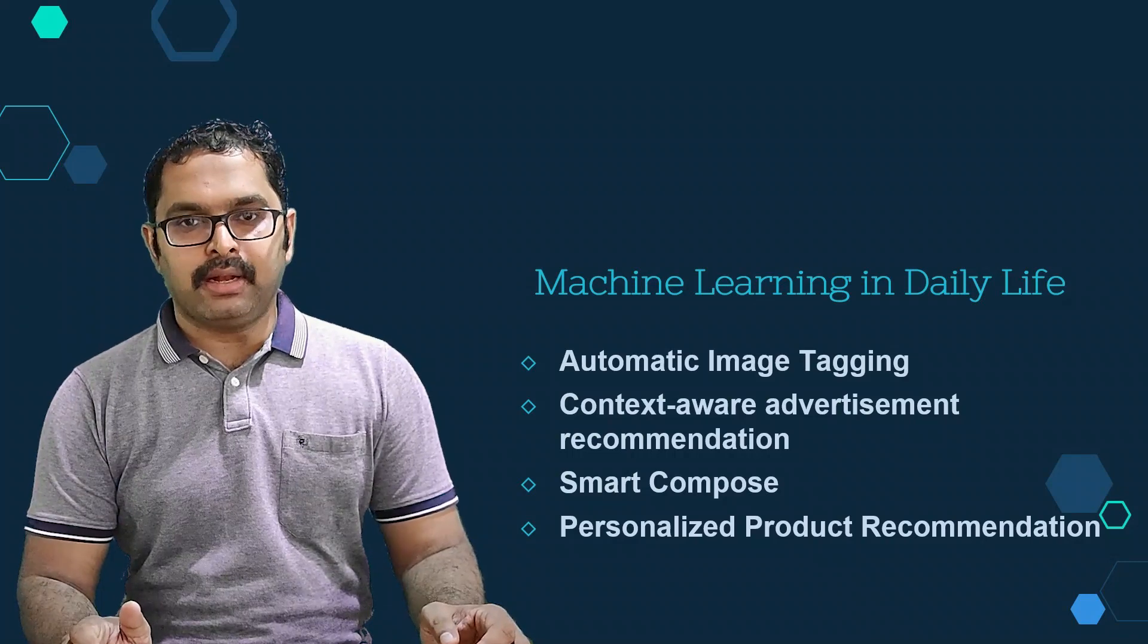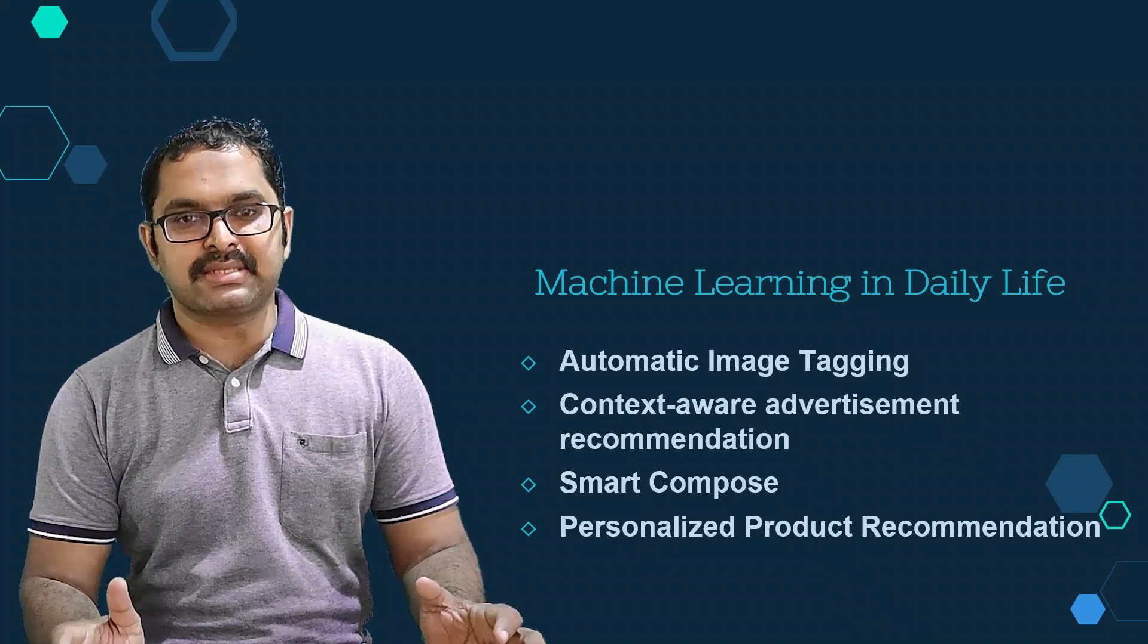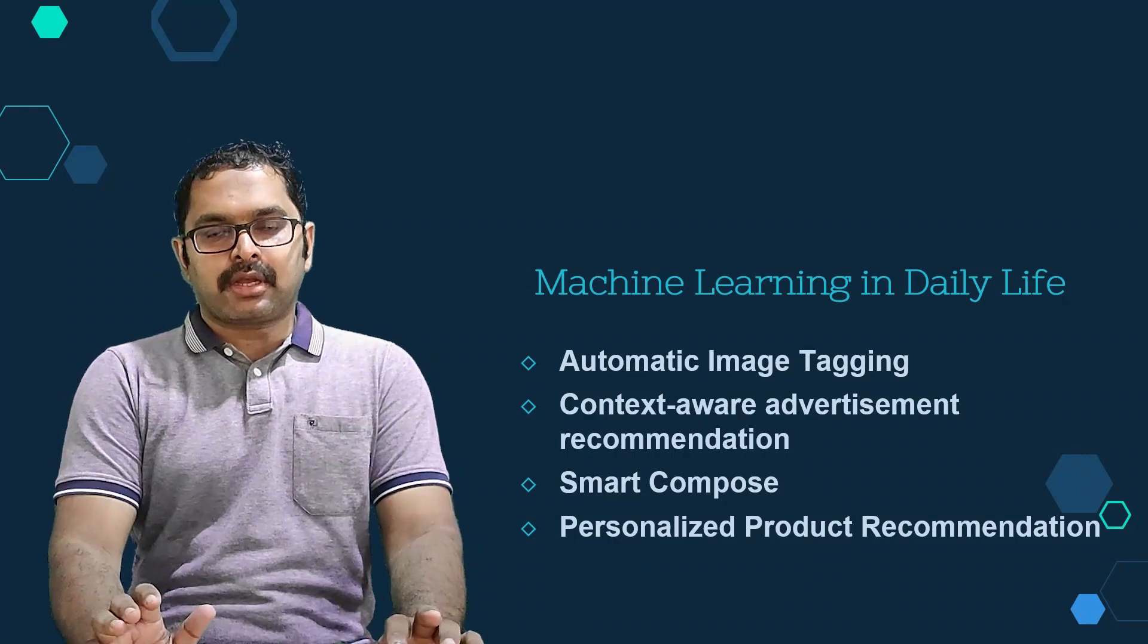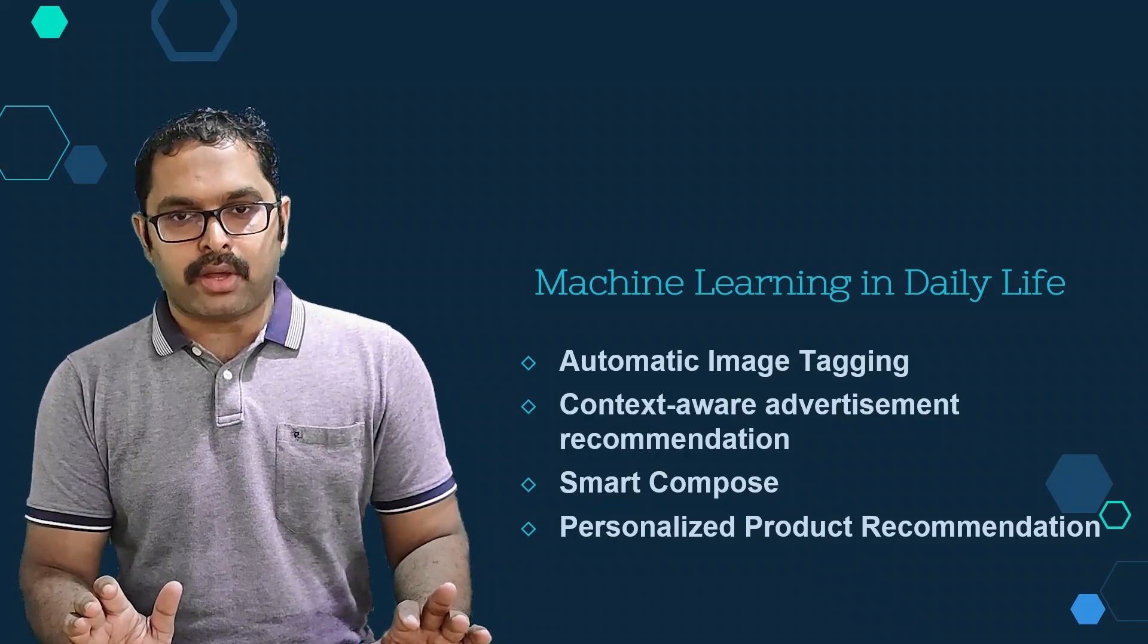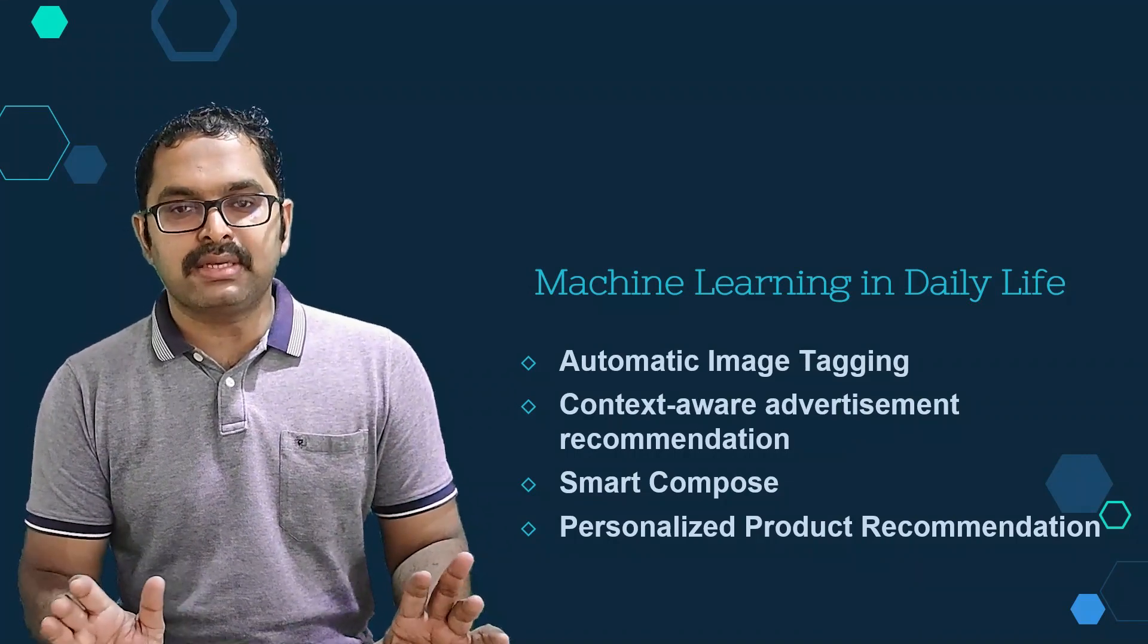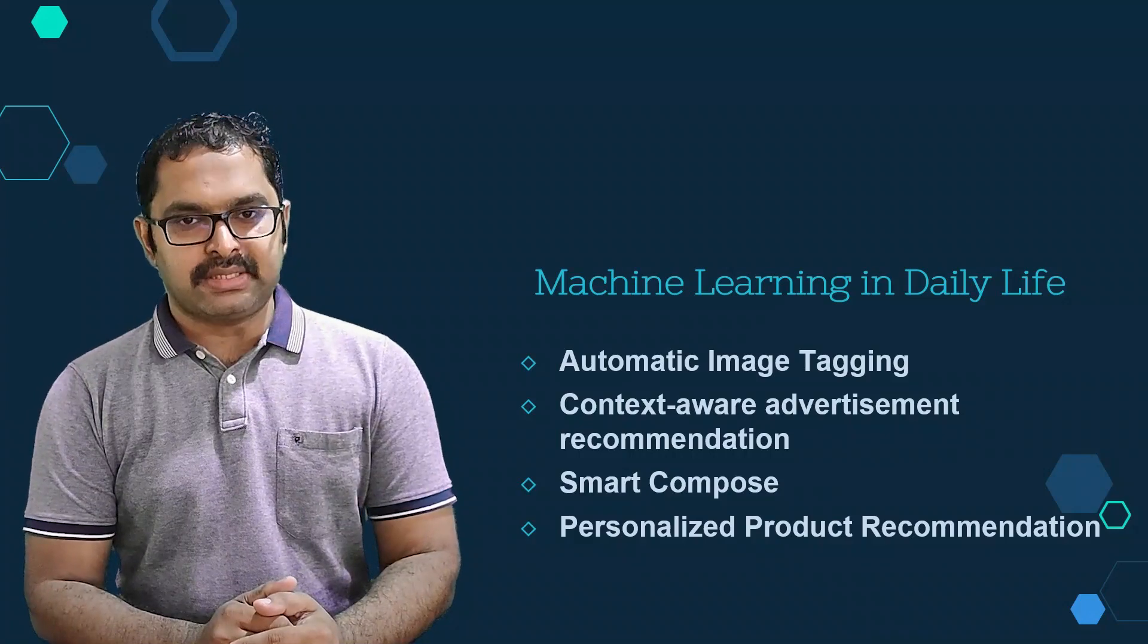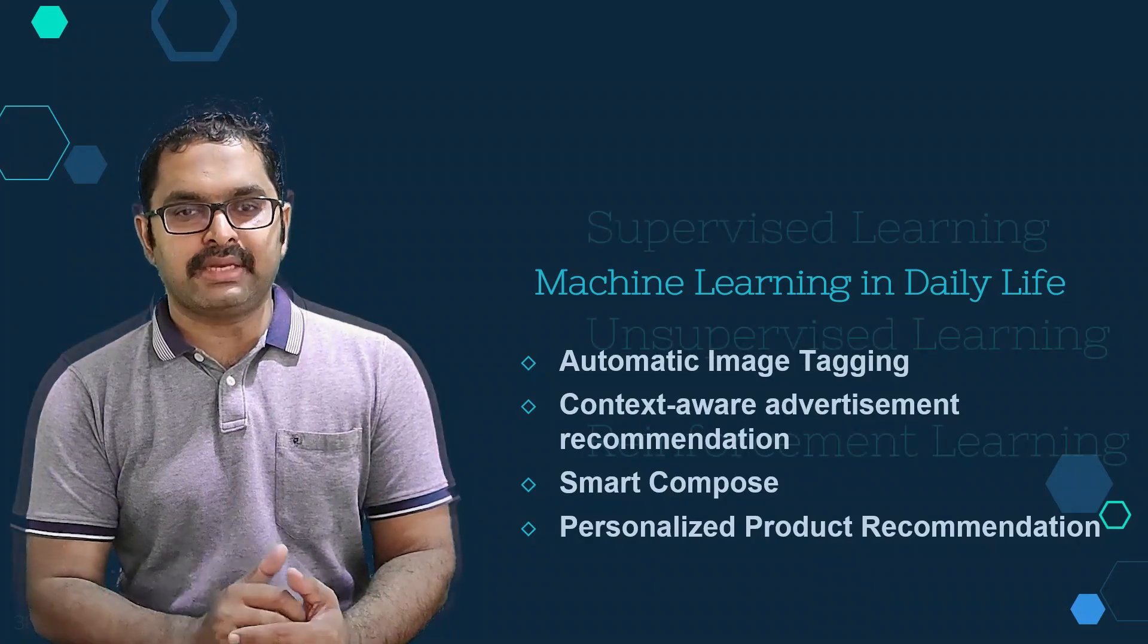While composing an email, the editor automatically suggests completion of sentences. Similarly, product recommendations of shopping cart sites are also examples of learned systems. Machine learning provides different statistical tools to learn from data.